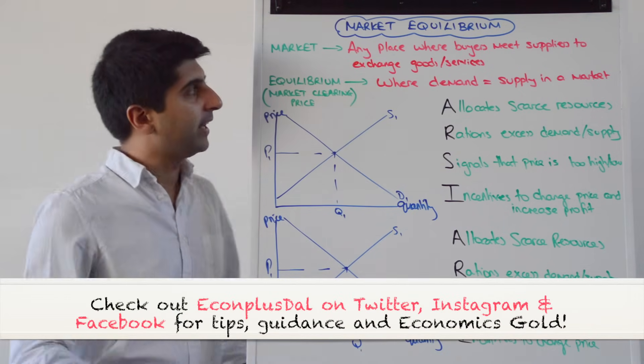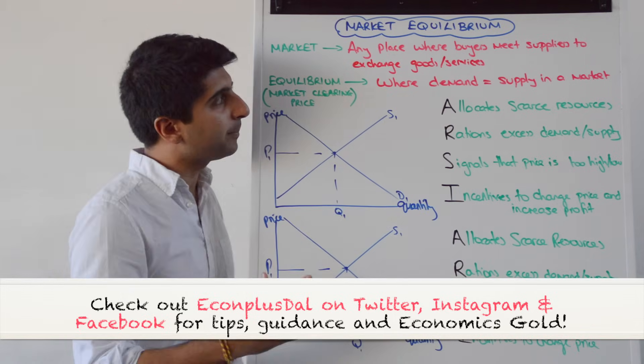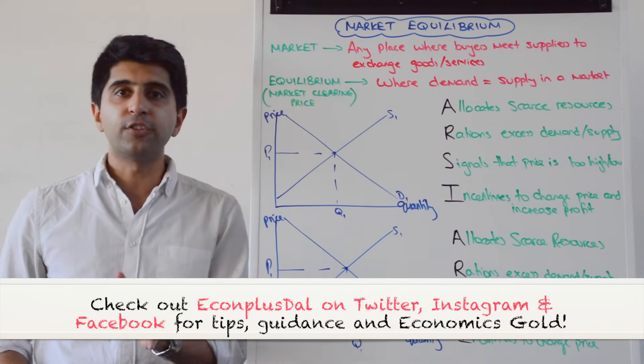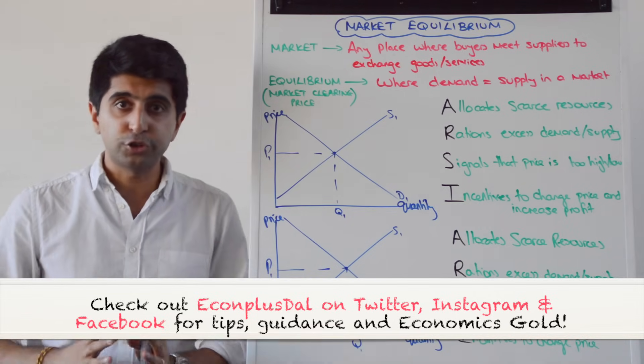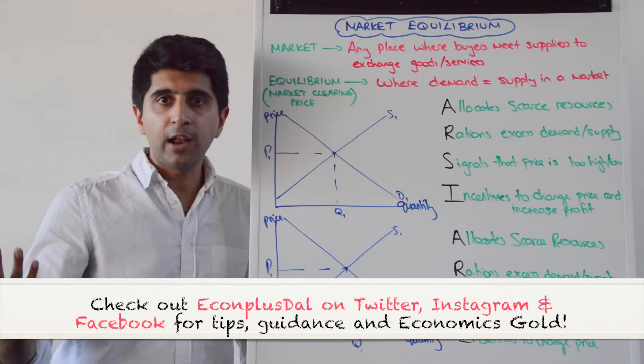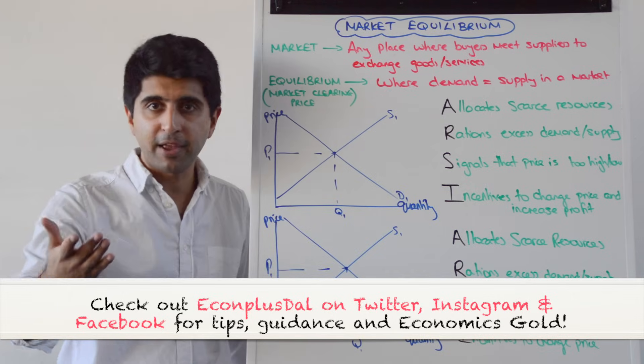Here is the definition of a market. It's any place where buyers meet suppliers to exchange goods and services. That place could be physical, like a market stall or an actual shop. It can be non-physical, so online through retailers like Amazon and eBay.